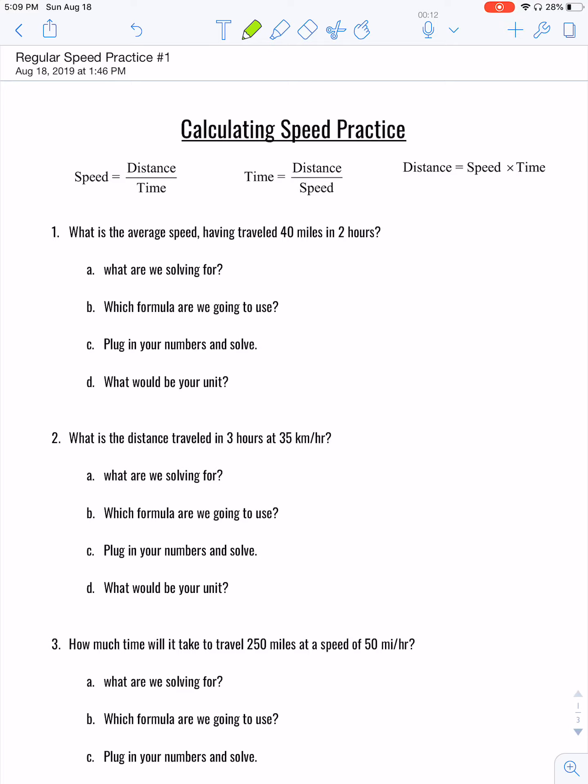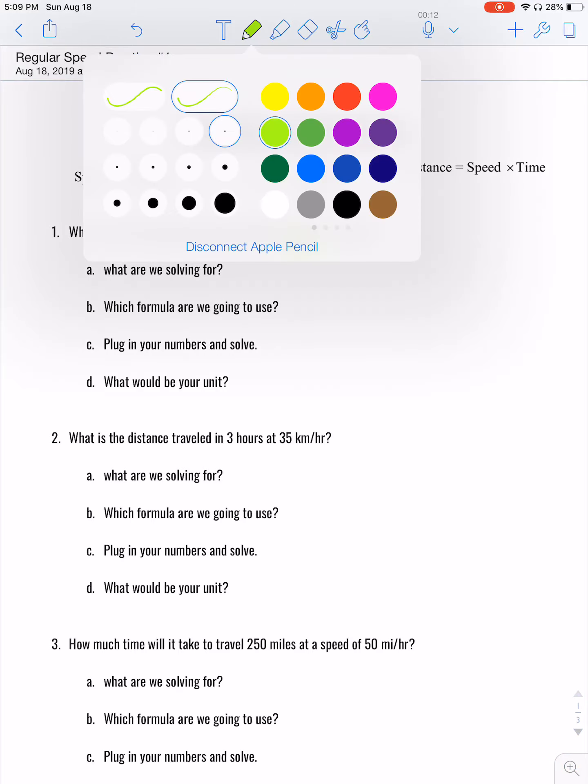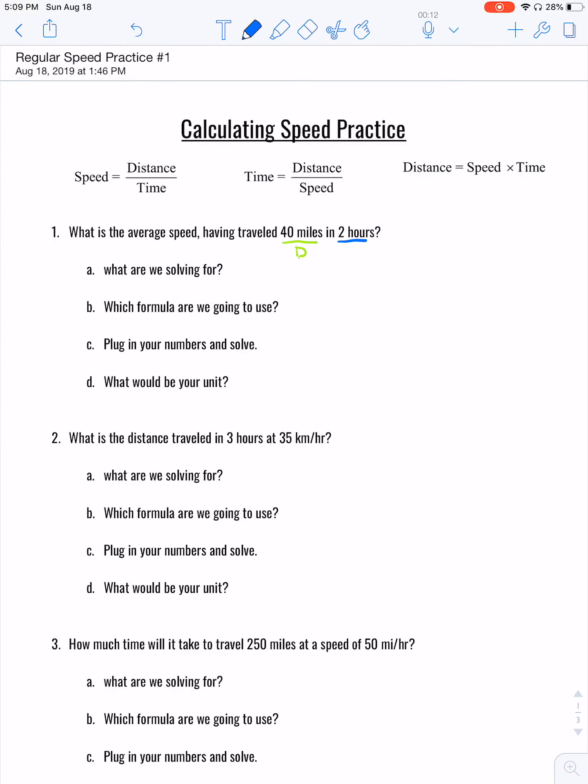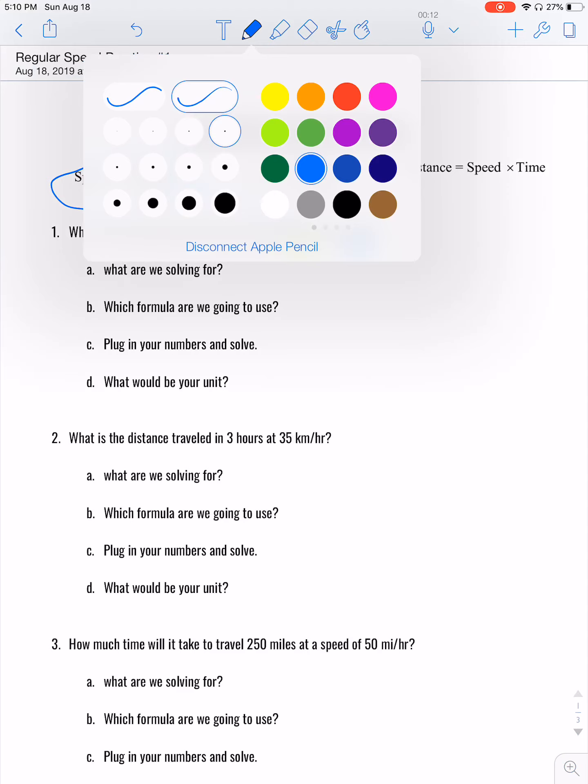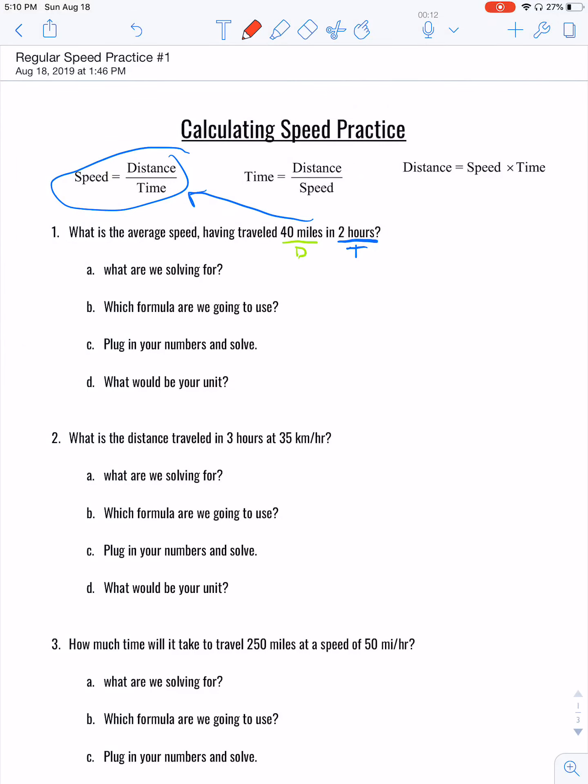The first question: what is the average speed having traveled 40 miles in two hours? So easy way to break this down is 40 miles is a unit to measure distance and then two hours we're going to be a measurement of time. So if we have the distance and time, we're going to be using this one. When it goes into the next question, what are we solving for? We're solving for speed.